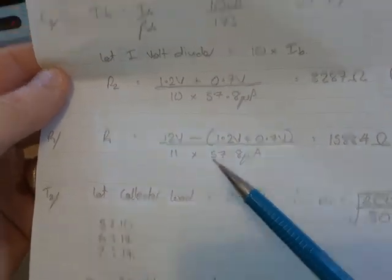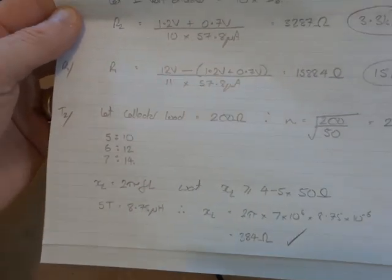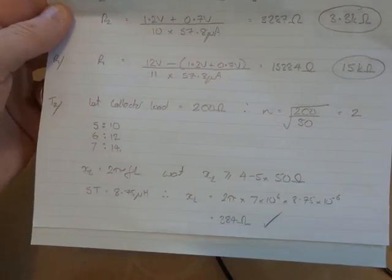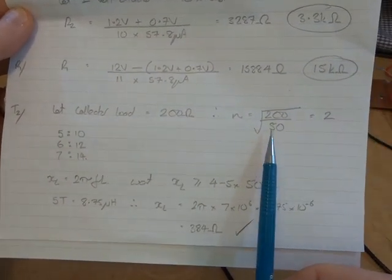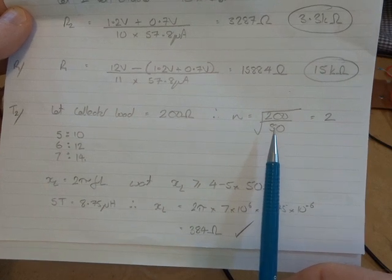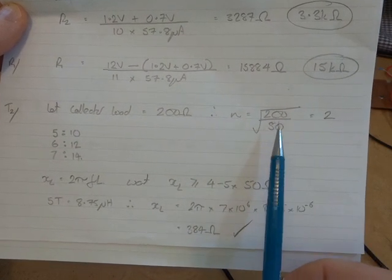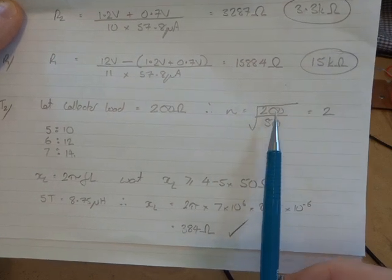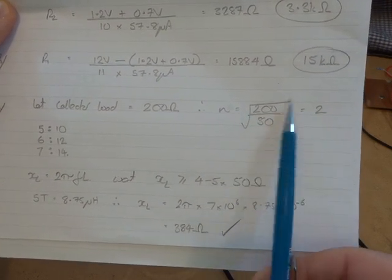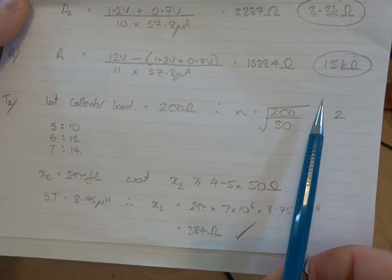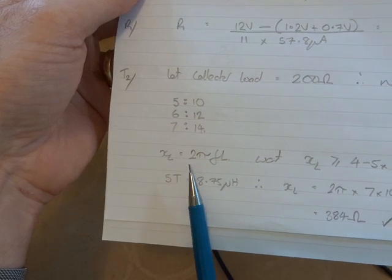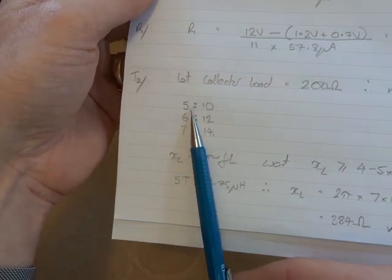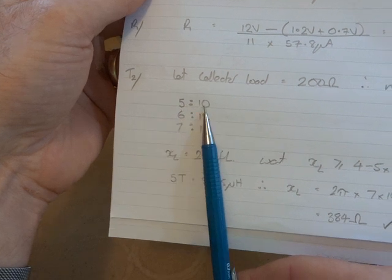Now in terms of T2, that's the one that's going to transform 50 back up to 200. Let me just zoom out a little bit, make it a bit easier. We need to work out what our turns ratio is going to be. So turns ratio, or n, is a square root of the impedance transformation. So 200 ohms divided by 50 gives us square rooted 2. So valid combinations for that, and I'm going to start at 5, 6, 7 for a reason I'll just talk about. So 5 turns ratio of 2 will give us to 10, 6 to 12, 7 to 14.